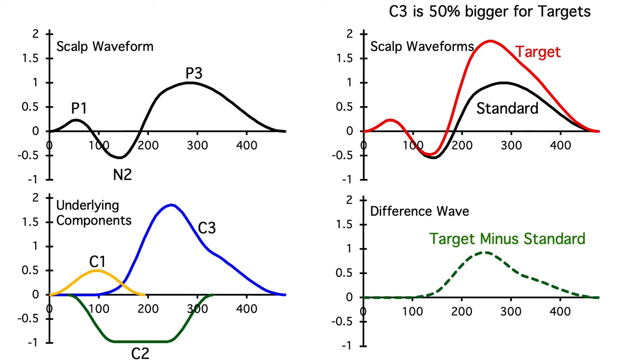The difference wave only extracts the change in the underlying component, but usually we're interested in a difference between conditions or a difference between groups, so that's OK. We usually have way more than three underlying components, and more than one of them might change between conditions. And we don't usually know what the underlying source waveforms are. However, the general principle is still the same.